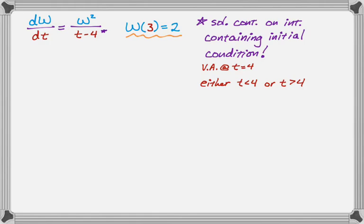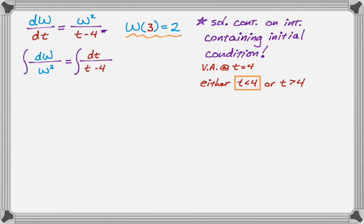The initial condition says w of 3 equals 2, so t can be 3. Since t can be 3, we must choose t less than 4 — if we chose t greater than 4 we couldn't even go through the initial condition, and that would be a big problem. So we keep this in mind for the final answer, but it doesn't impact the solving steps until then. We want everything with w on the left-hand side and everything with t, including dt, on the right-hand side. So we end up with dw over w squared equals dt over (t minus 4), and now this becomes just two integrals to solve. On the left-hand side, I'll call it w to the negative second: add 1 to get w to the negative first and multiply by the reciprocal of negative 1, giving negative w to the negative first. On the right-hand side we get a natural log — the natural log of the absolute value of t minus 4 — and we put plus c on the side with the independent variable.